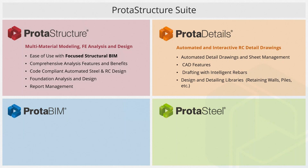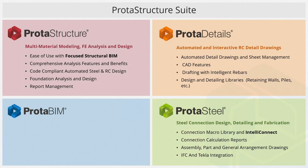Drafting with intelligent rebars is also possible in the software, and you can use macros in our libraries such as retaining walls, piles, pool design, or scaffold design. In Prota Steel, we have plenty of different connection macros — about 90% of different connections can be generated by our macros. We have IntelliConnect, a revolutionary feature that can assess the joint and select the most appropriate connection. You can create connection calculation reports, and assembly and part drawings are fully automated. General arrangement drawings are semi-automated in the software.